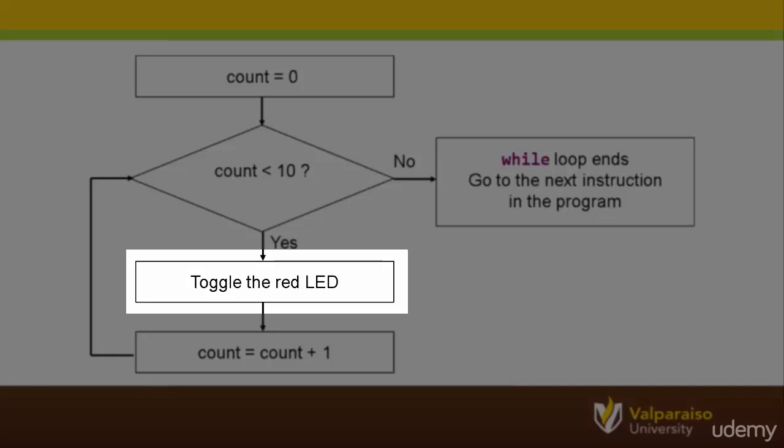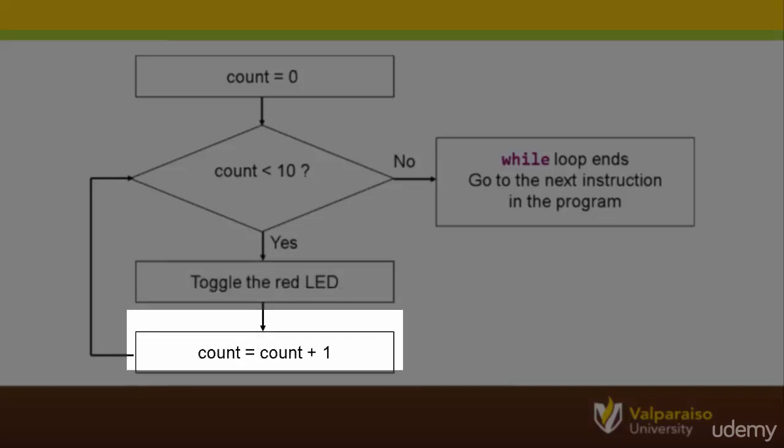Next, the while loop will do something to update the control variable COUNT. In this case, the value stored in the COUNT variable is increased by one. Finally, the while loop returns the control variable and tests it against the specified condition.